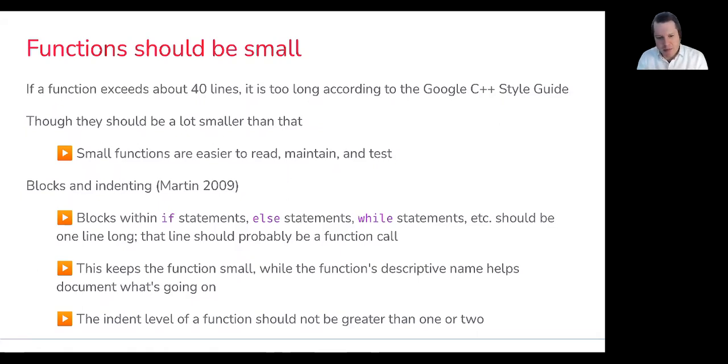So not only does this keep functions small, while the functions' descriptive names help us document what's going on under that scenario. And this would be a realistic expectation in this class, but the indentation level of a function should not be greater than one or two. Meaning if you start getting in terms of the actual indentation, if you get too many levels deep, there's probably some code within those deeper levels that could be taken out and put into a function.